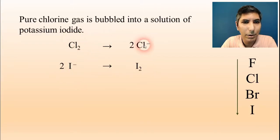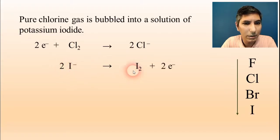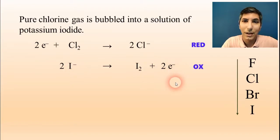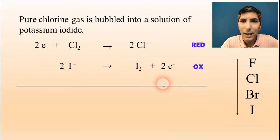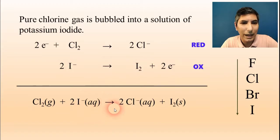On the first half reaction, we have a charge of zero as opposed to negative two, so I need two electrons on the left side. On the second half reaction, we have negative two versus zero, so two electrons go on the right side. Since the first one is gaining electrons, that's reduction. Since the second one is losing electrons, we call that oxidation. Now we're ready to add these half reactions together — the two electrons will disappear once we add them. So here is our overall balanced equation: chlorine gas and two iodide ions react to produce two chloride ions and iodine solid.